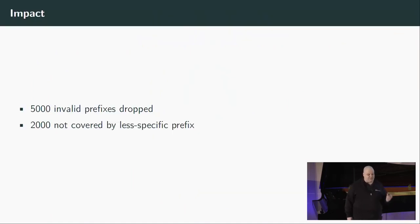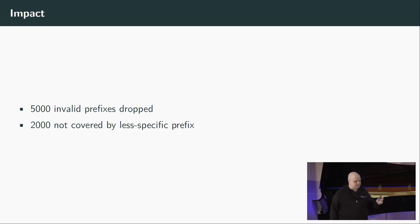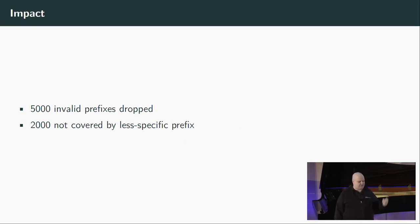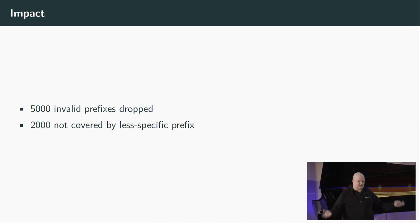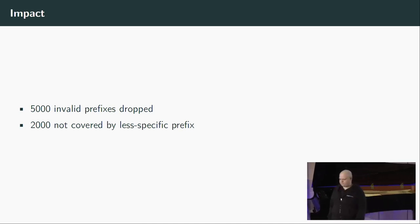At that time, 5,000 invalid prefixes were dropped from the routing table, and 2,000 of those were not covered by a less specific prefix. So 3,000 prefixes were covered by a valid larger prefix, but 2,000 had no other route — so 2,000 destinations dropped from our table that day. And after that we said, okay, let's see what happens next.